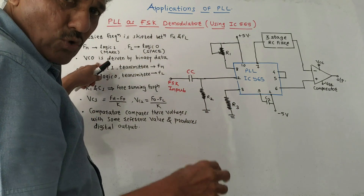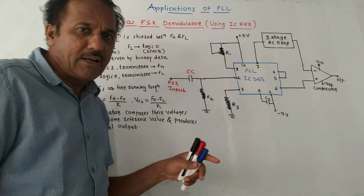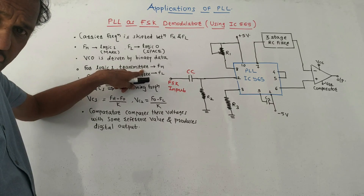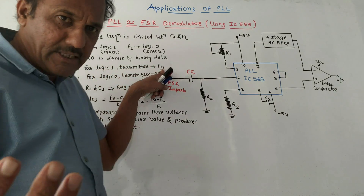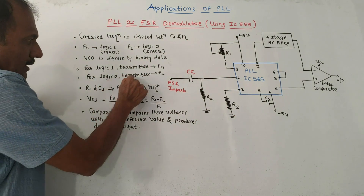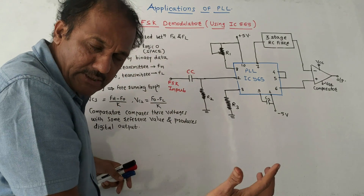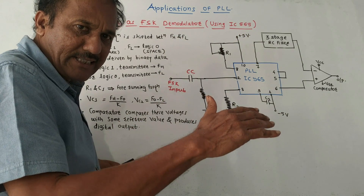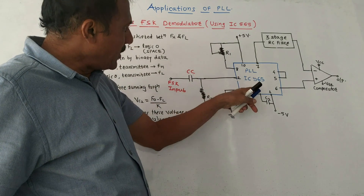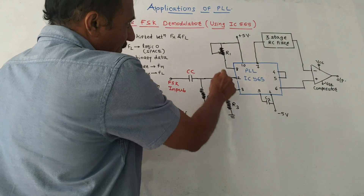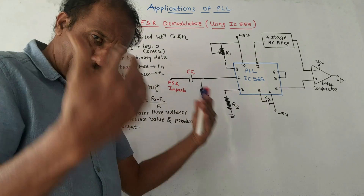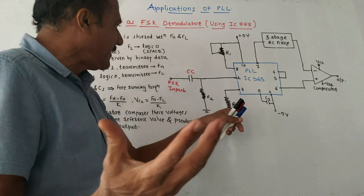In this application, the VCO — that is, the voltage-controlled oscillator — is driven by the binary data. For logic 1, the transmitter generates frequency FH, the higher frequency, which is greater than the center frequency. For logic 0, the transmitter generates FL, the lower frequency, which is less than the center frequency F0. This is the connection diagram for PLL IC 565, where resistor R1 and capacitor C1 are used to set the free-running frequency F0.